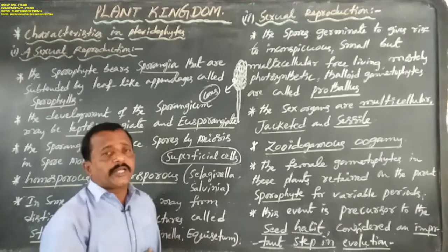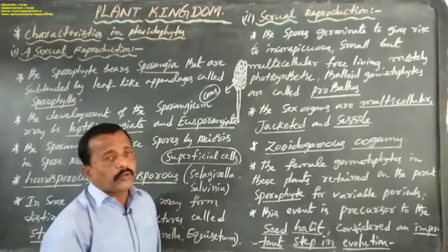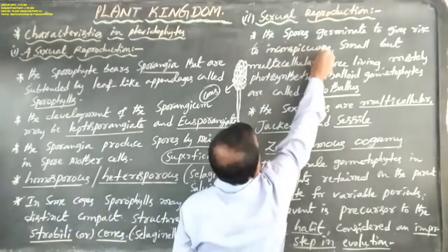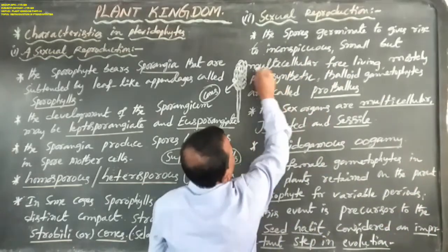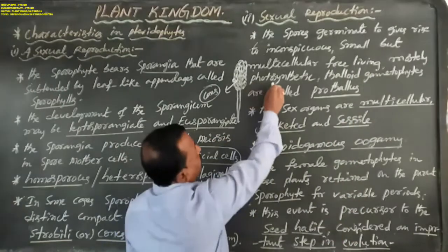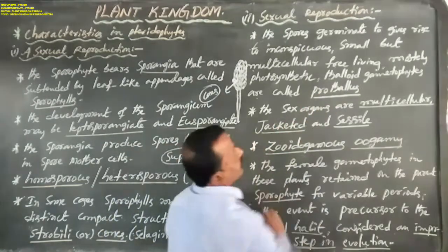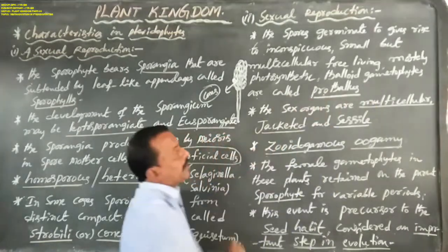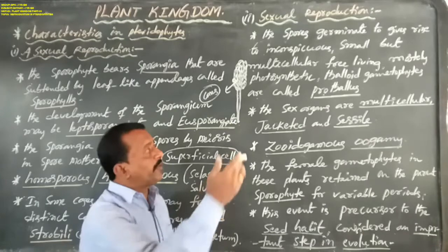In sexual reproduction in pteridophytes, most species produce a prothallus. The prothallus is the gametophyte: it is inconspicuous, smaller in size, multicellular, free-living, mostly photosynthetic, green in color, and thaloid — not differentiated into true root, true stem, and true leaves. This gametophyte is also known as prothallus.